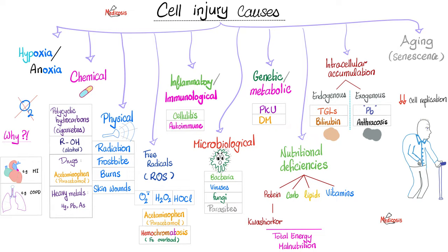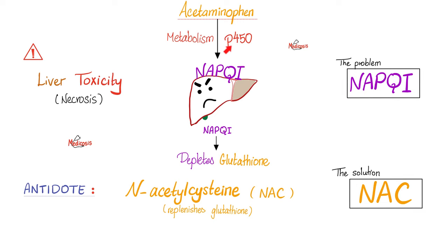Let's talk about acetaminophen. Acetaminophen, or paracetamol, will be metabolized in your liver by the liver P450 enzyme system - cytochrome - into something called NAPQI. NAPQI stands for N-acetyl-P-benzoquinone imine. This NAPQI is evil - it's going to deplete the glutathione. Glutathione is the good guy; it's a free radical scavenger. How do we treat acetaminophen overdose? Replenish the good guy - by giving N-acetylcysteine.